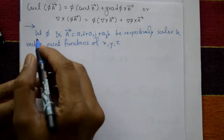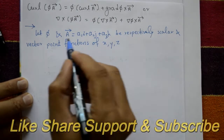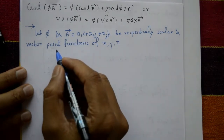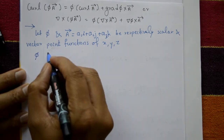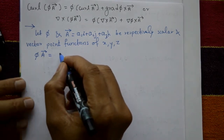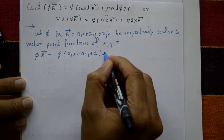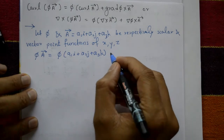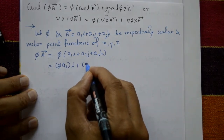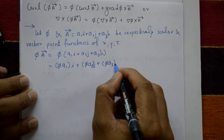Let φ be a scalar point function and vector A = a1·i + a2·j + a3·k be a vector point function of x, y, z. Then φ times vector A equals φ·a1·i + φ·a2·j + φ·a3·k.